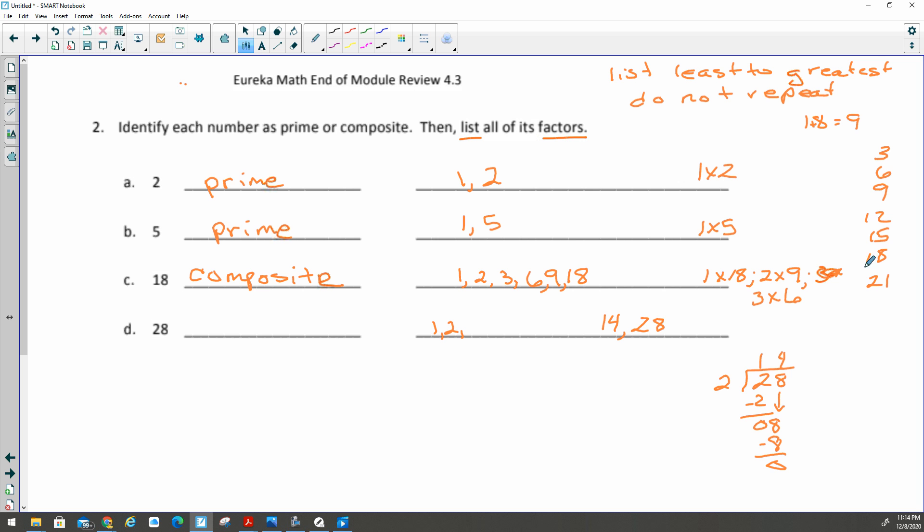3 does not go into 28 because if I finish my skip counting, 21, 24, 27, 30, I can see that 28 would fall between those, so 3 does not work. 4 works, we can do 4 and 7. Then we check 5, 5 does not go into 28. We can check 6, 6 does not go into 28 because that would be 24 and 30. 7 is right there, we already have it, so there's my list.